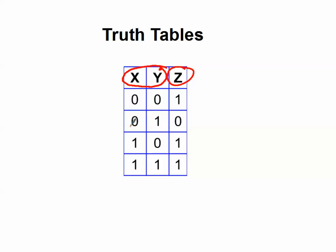So for two inputs, you have 00, 01, 10, 11. And then you map the output for each of those combinations of inputs. That's why it's called combinational logic.